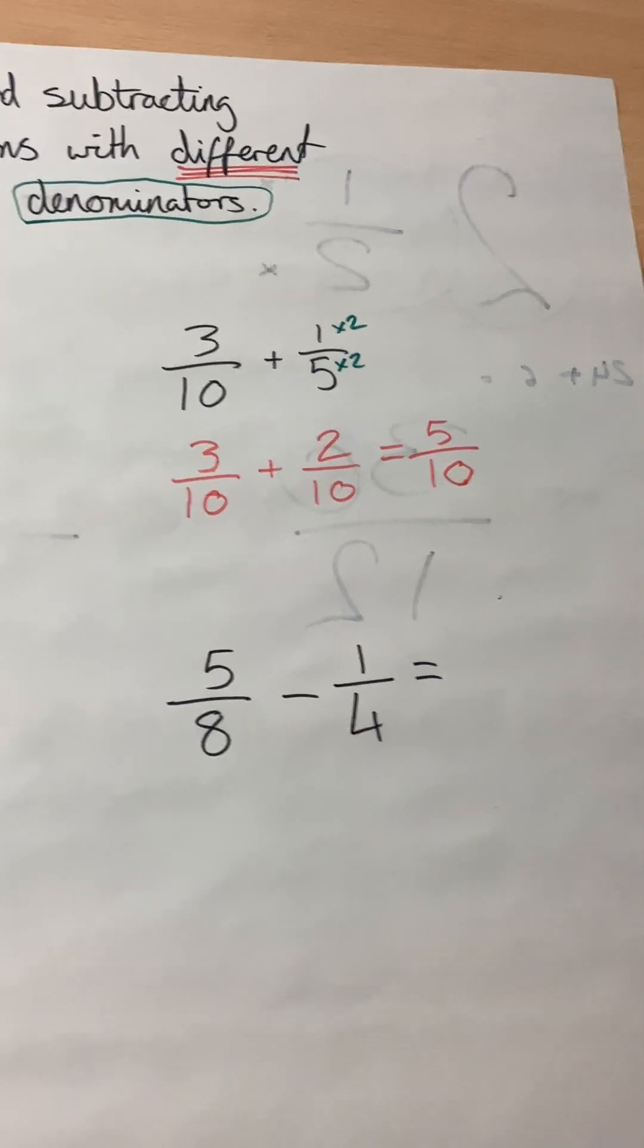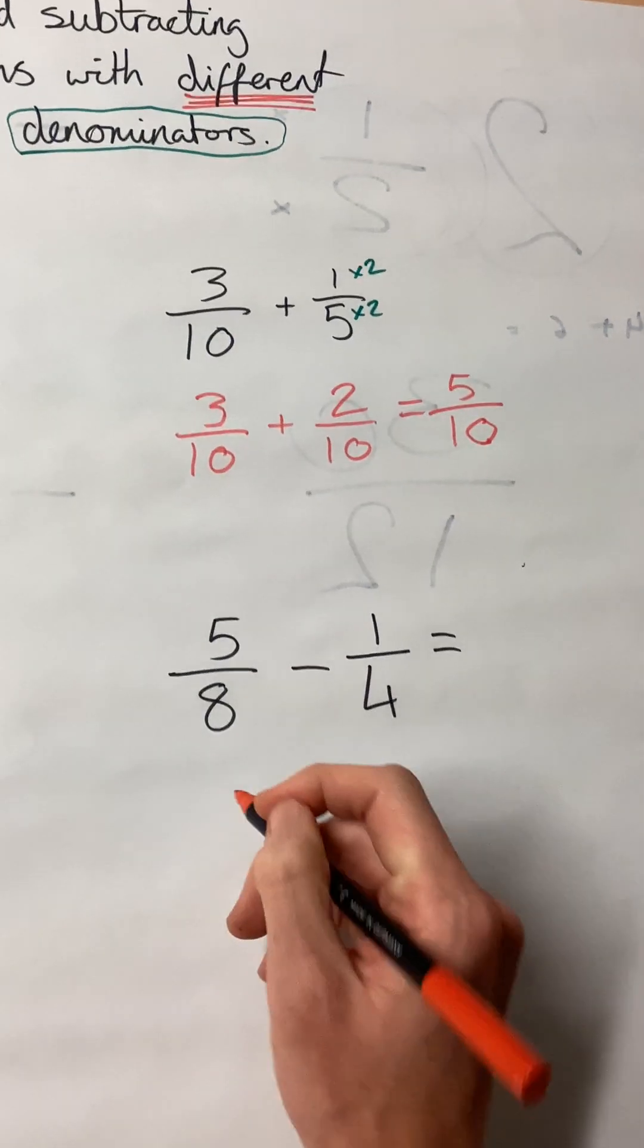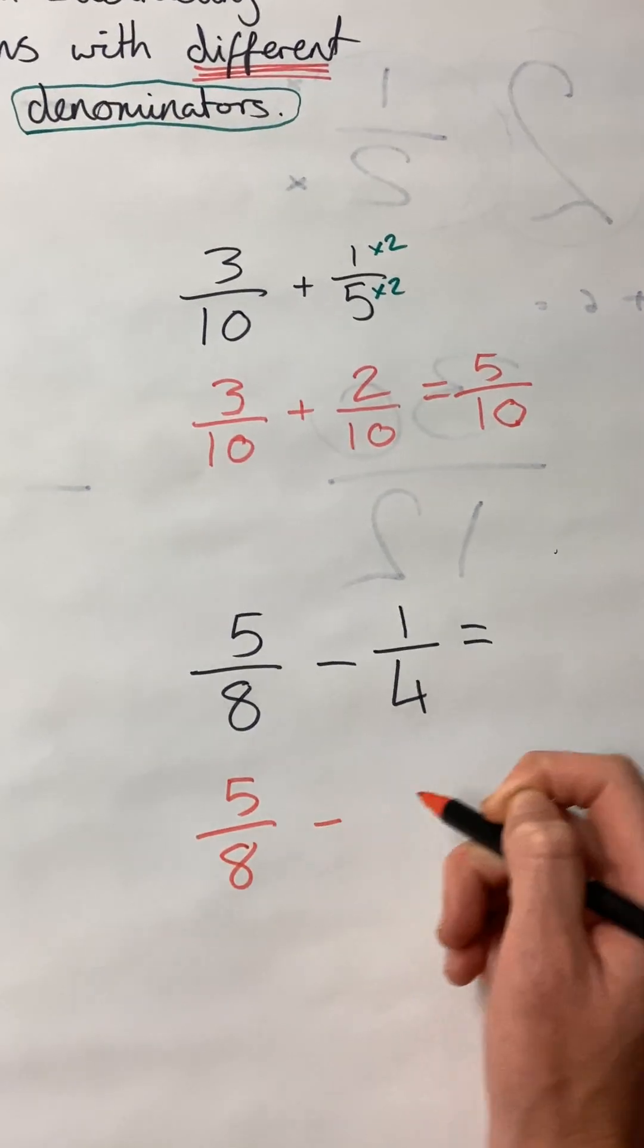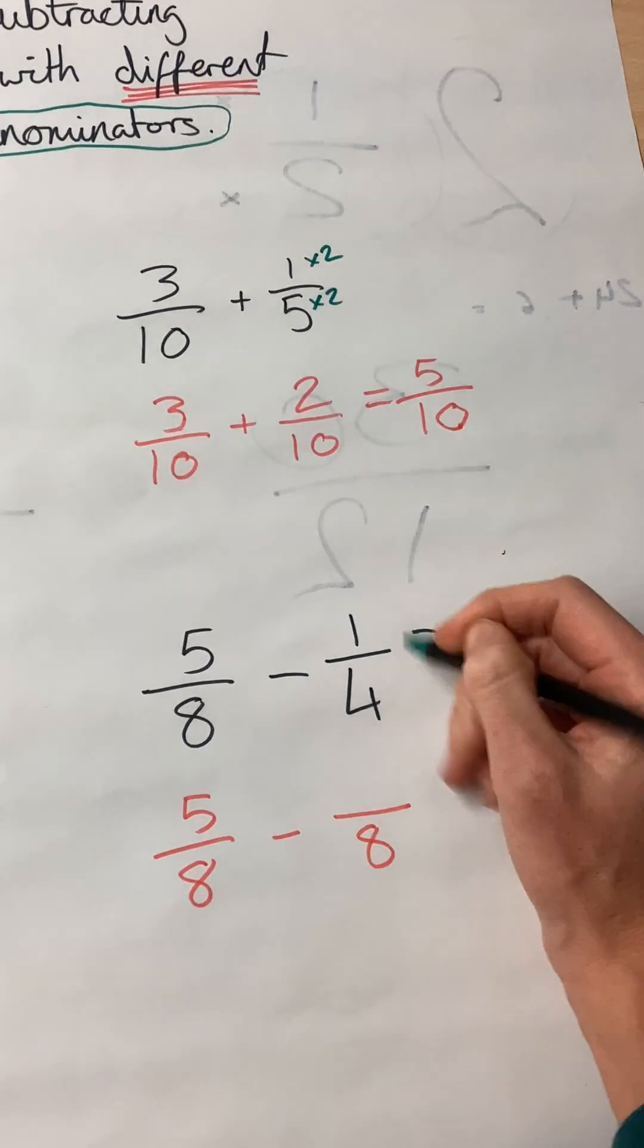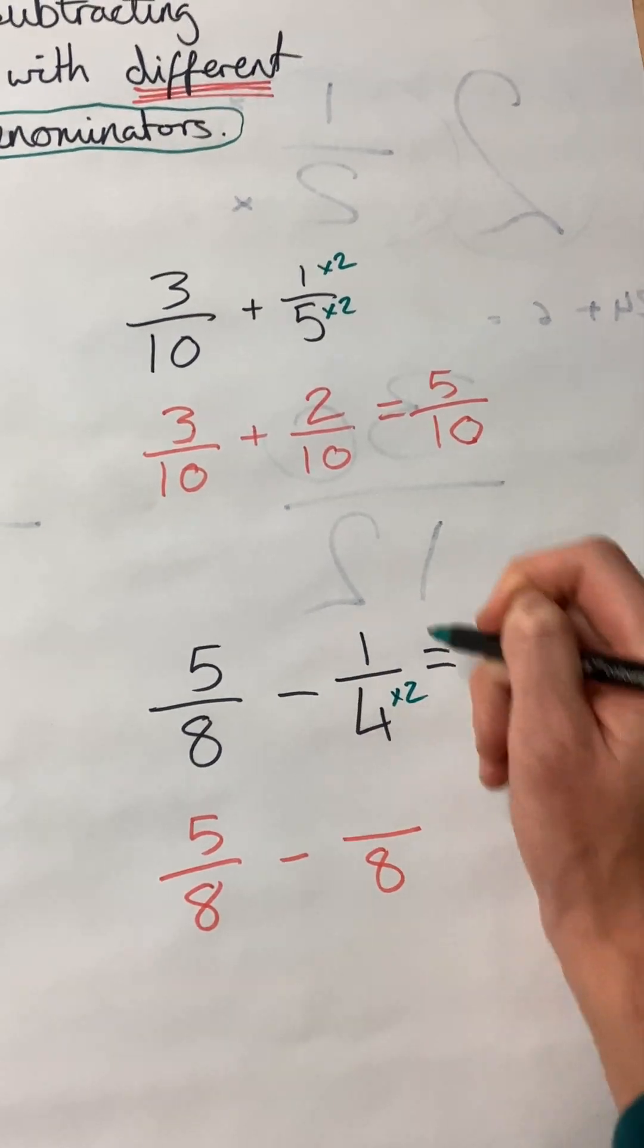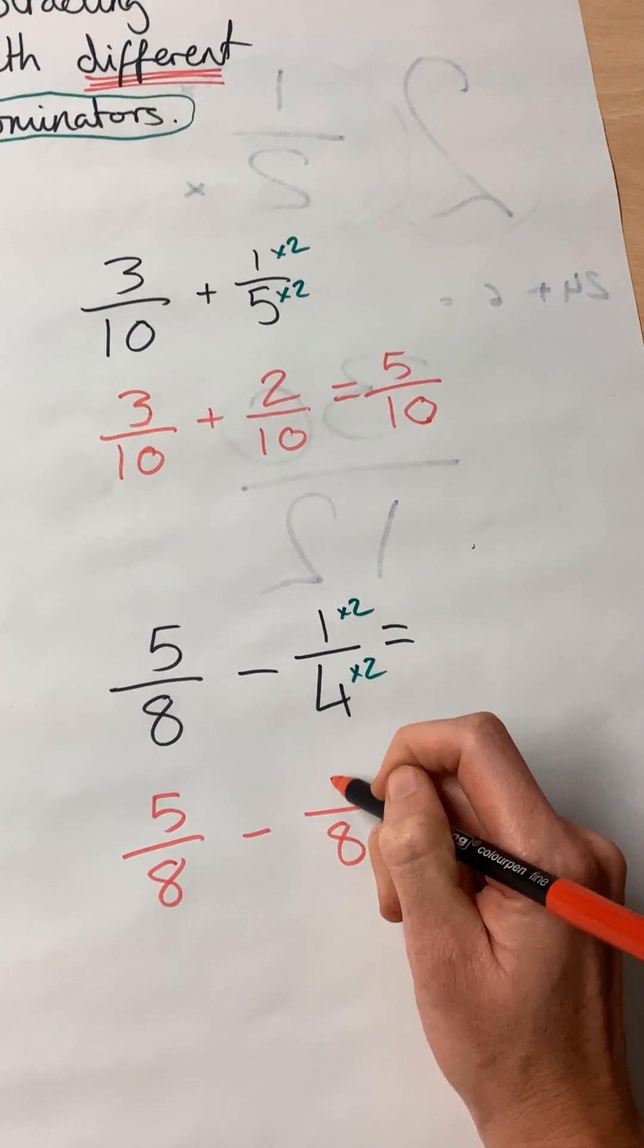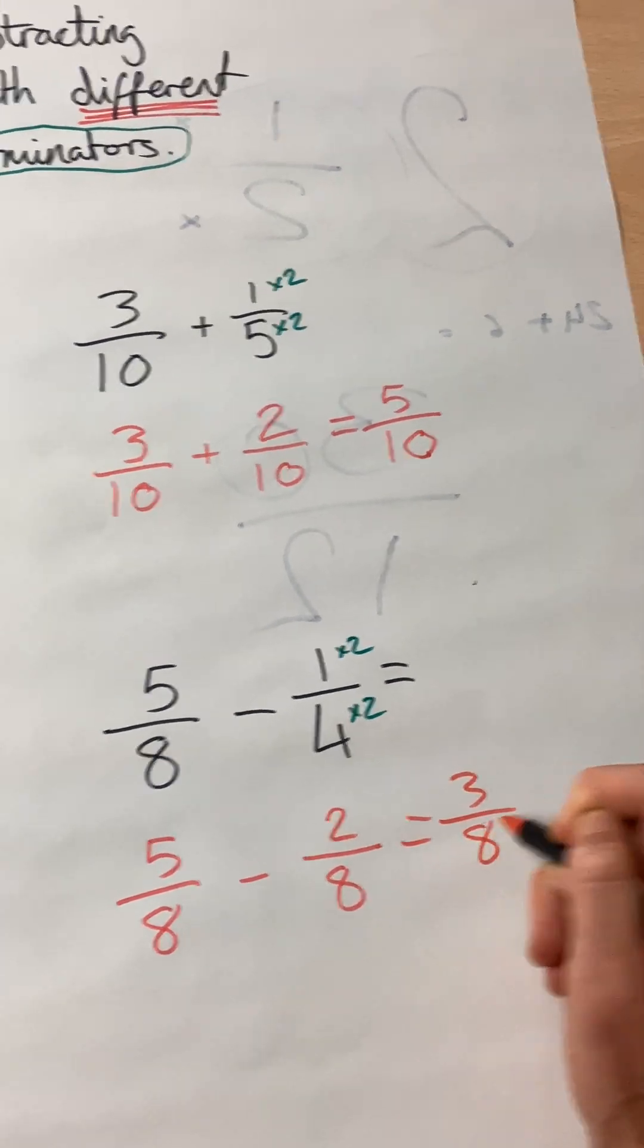We need to rewrite the question where the denominators are the same. So five-eighths minus eighths. So four is times two. So then we times two at the top and we get five-eighths minus two-eighths, which gives us three-eighths.